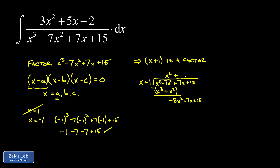Moving to the linear term: we need negative eight x to match the leading coefficient, because distributing to x plus one gives negative eight x squared minus eight x. Subtracting that out, the leading terms cancel and we get fifteen x. In the constants place, we need plus fifteen. Distributing gives 15x plus 15, and subtracting gives zero — no remainder, as expected since x plus one is a factor.